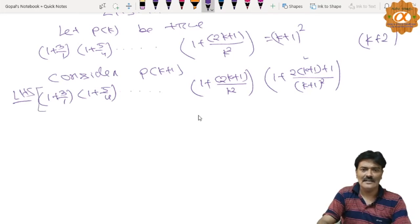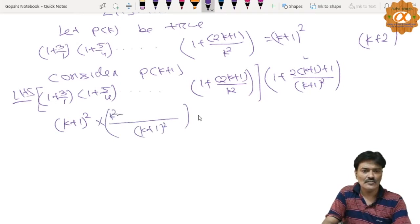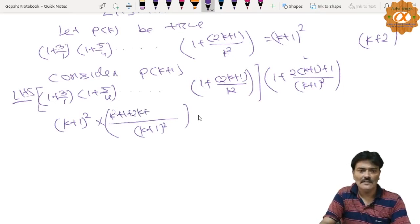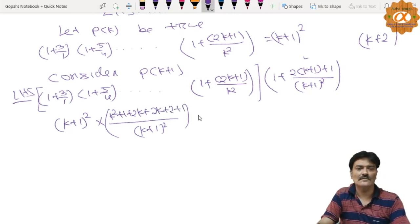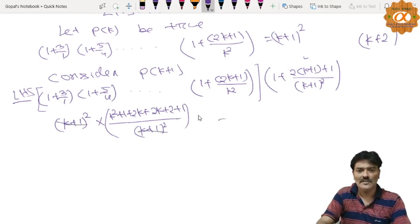Yahaan se yahaan hum replace karenge is ka value (k+1) ka whole square multiplied by... [algebraic manipulation]... is a whole square.